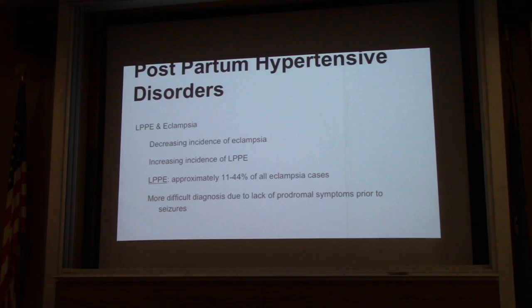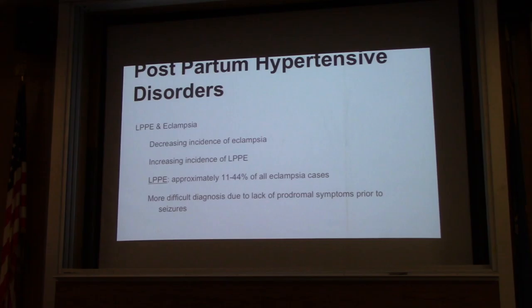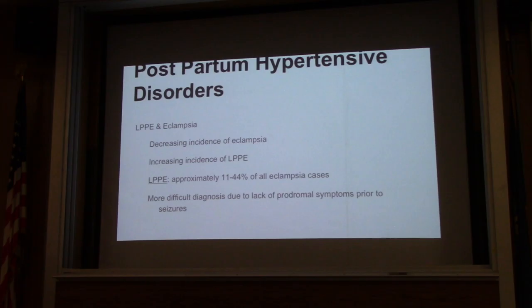Going briefly over the epidemiology of these entities. Postpartum hypertensive disorders range from late preeclampsia to late preeclampsia. The incidence of eclampsia is probably decreasing, probably because people are more aware of it and we have better prenatal and antenatal care in terms of treating hypertension. But there is an increasing incidence of late preeclampsia. Based on whatever study you read, late preeclampsia accounts for approximately 11 to 44% of all eclampsia cases. People hypothesize this is due to women being discharged earlier after delivery, putting them at higher risk after the 48-hour period.